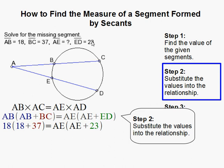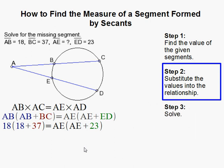Then we substitute the values that were given here. So 18 for AB, 37 for BC, and 23 for ED. Now we need to solve for AE because that's what they're asking for.